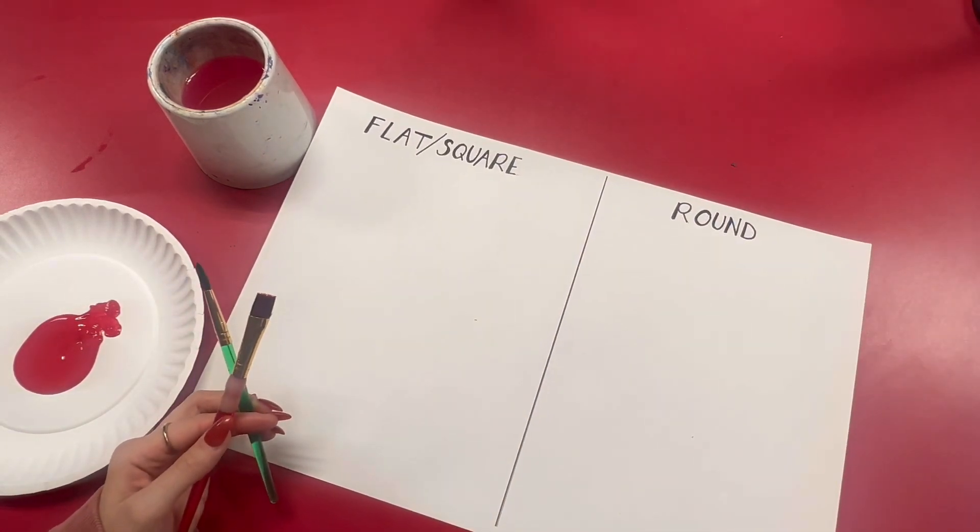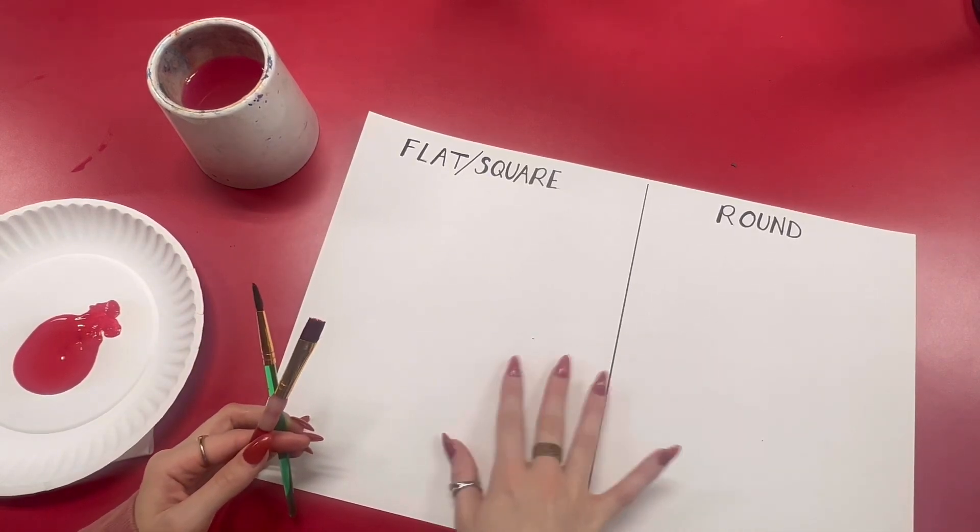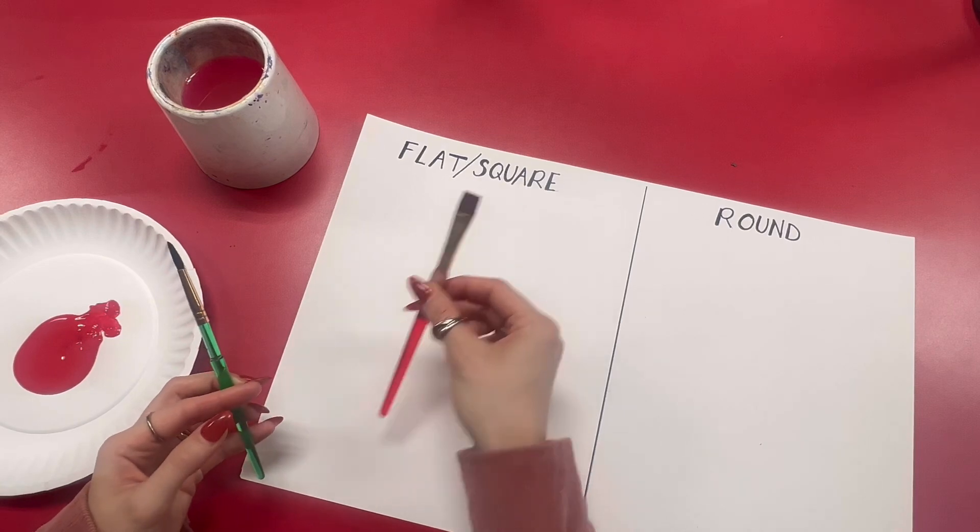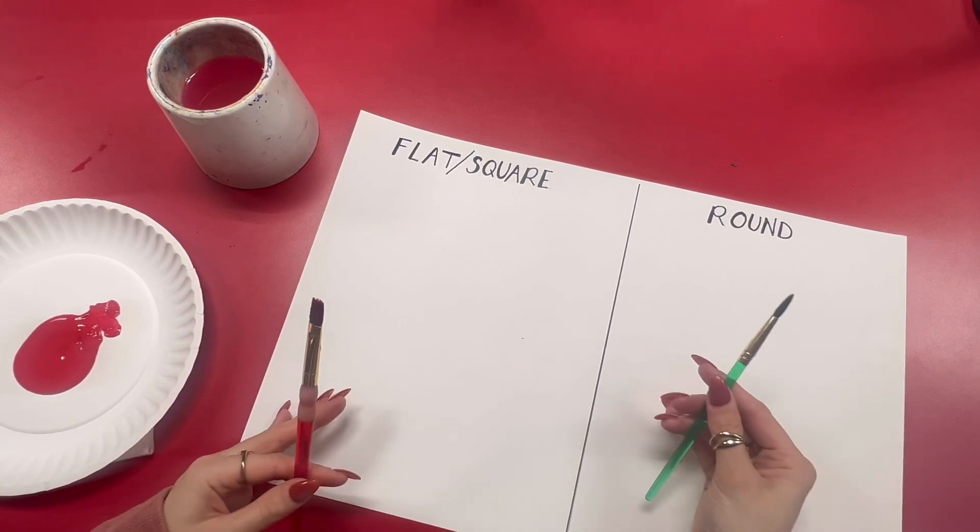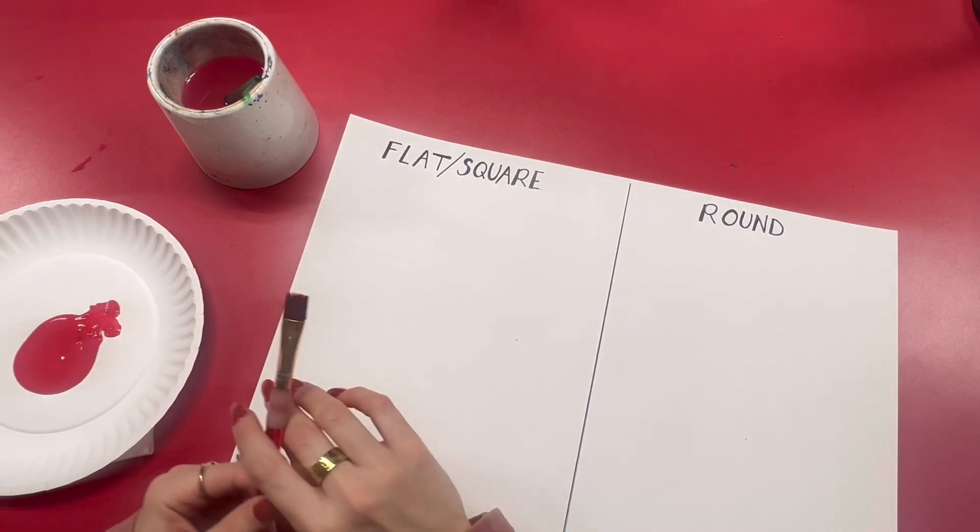So everyone's going to get a large piece of paper divided into two sides. This side is for the flat square brush and this side is for the round brush. And we're going to do the flat square side first.